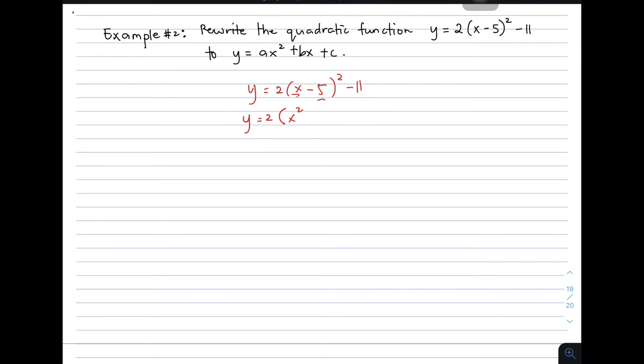Then multiply x and 5. It will give you 5x, then multiply it by 2, that is 10x. Copy the operation between x and 5, that is subtraction, so minus 10x. Then square 5, that will give you 5 raised to 2 or 25, minus 11.